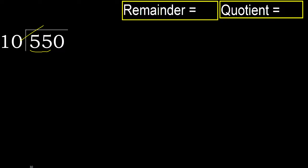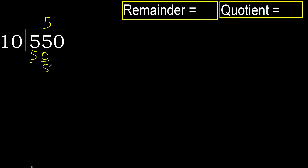10 — multiply by which number is nearest to 55 but not greater? 10 multiplied by 6 is 60, which is greater. Multiply by 5: 50 is not greater. Subtract: 55 minus 50 is 5.